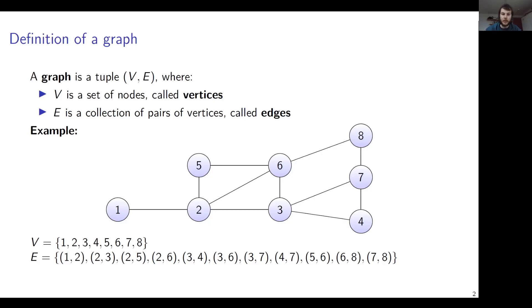This is an example of a graph. A graph consists of two things, namely V and E. V is a set of nodes called vertices — in this graph those are 1, 2, 3, 4, 5, 6, 7, 8, so they are the circles in this structure. E is a collection of pairs of vertices, and we call them edges. The edges are the lines that connect those vertices.